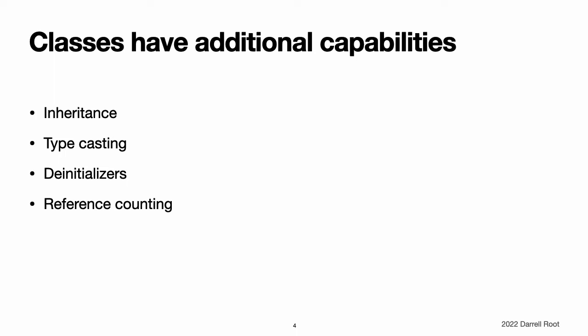The additional capabilities that classes support come at the cost of increased complexity. As a general guideline, prefer structures because they are easier to reason about, and use classes when they are appropriate or necessary. In practice, this means most of the custom data types you define will be structures and enumerations. For a more detailed comparison, see choosing between structures and classes.